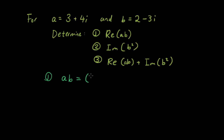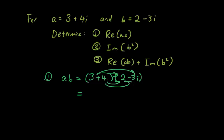ab is equal to 3 plus 4i times 2 minus 3i. And then we multiply them out like we do in binomial expansion. So it's 6 minus 9i plus 8i minus 12i squared. Now let's convert the minus 12i squared to plus 12.